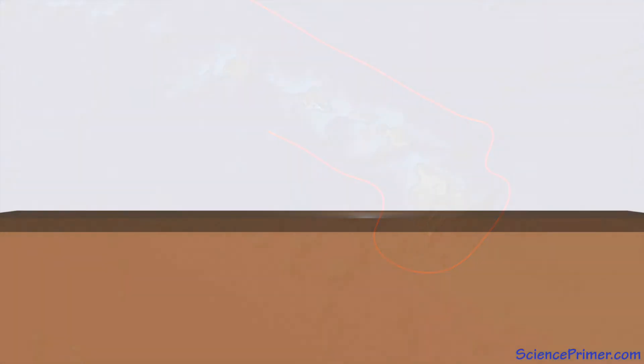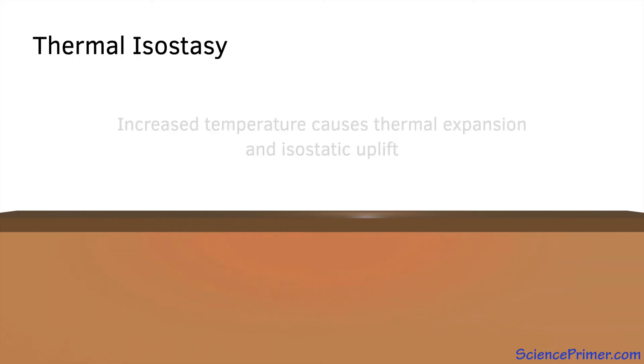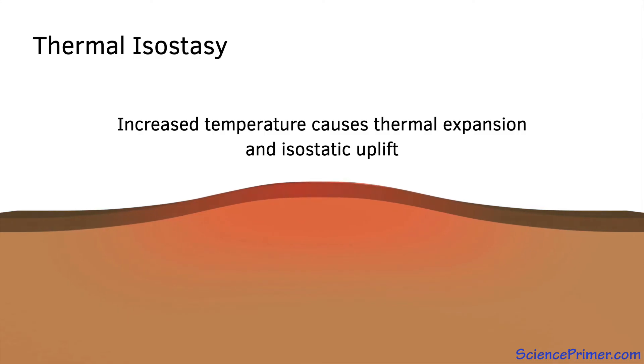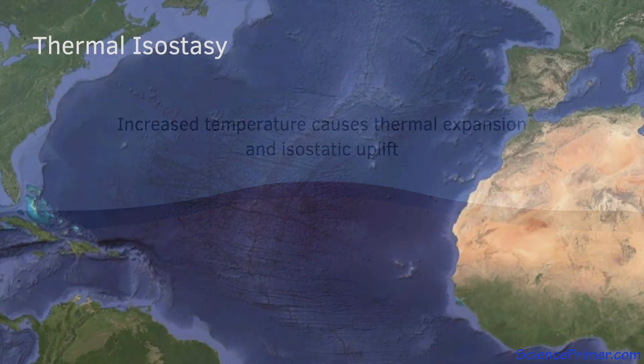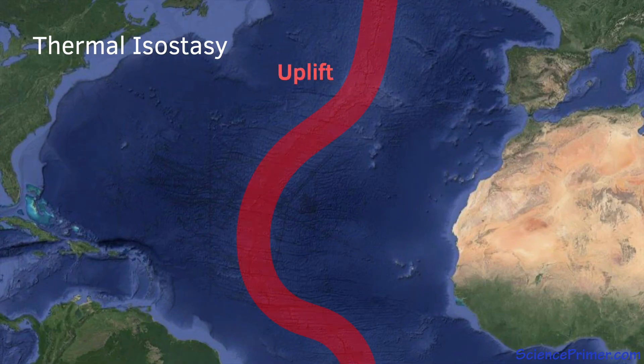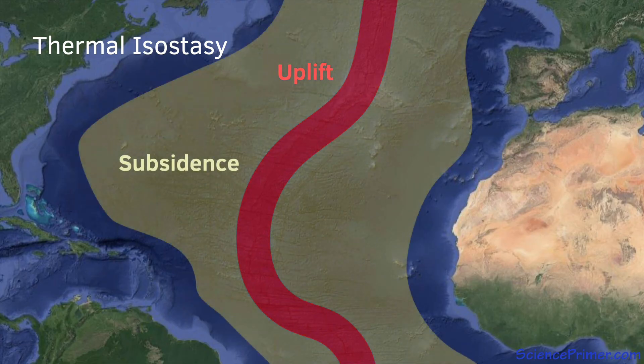Changes in temperature of the lithosphere due to tectonic activity can also drive isostatic changes. Increased temperatures and the reduced density from thermal expansion cause isostatic uplift. This is a reason there is an increase in elevation along active ocean ridges. Further from the ridges, the lithosphere cools, making the rock more dense, resulting in subsidence.